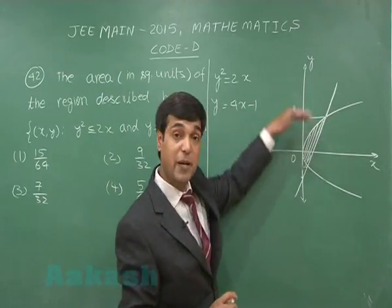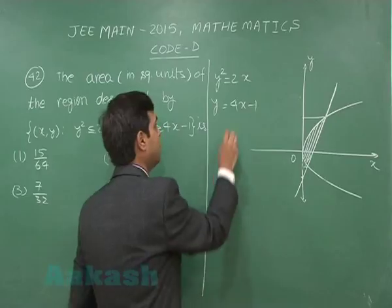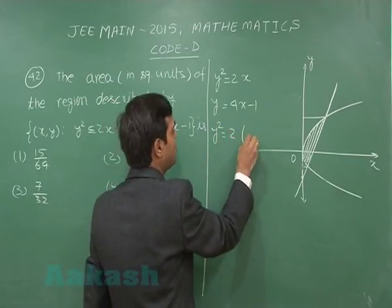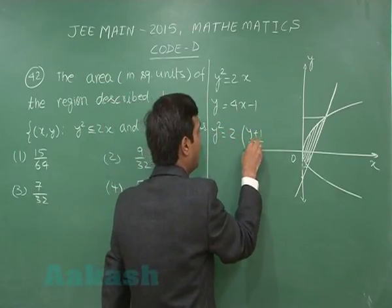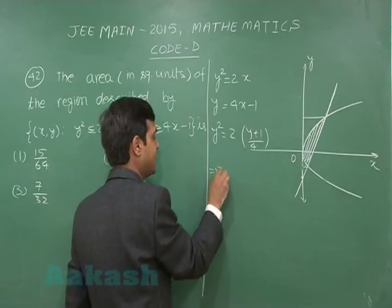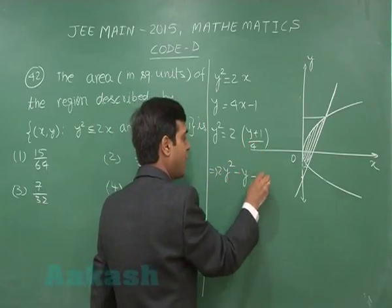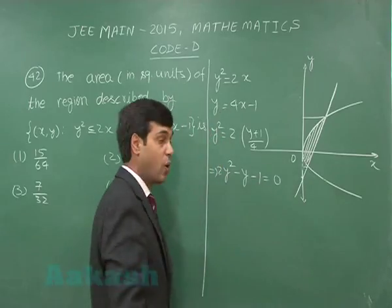So we can find the y coordinates and can integrate with respect to y. So solving the two curves, we find y² = 2(y + 1)/4, that is 2y² - y - 1 = 0. Solving, y = -1/2 and 1.